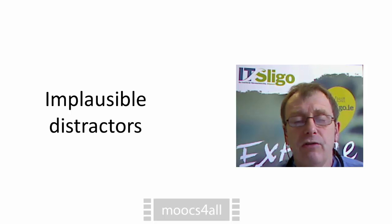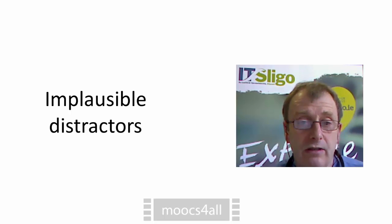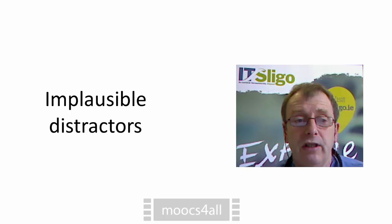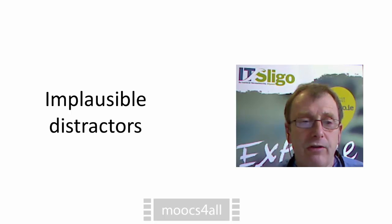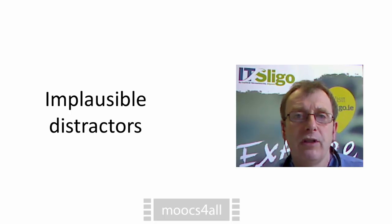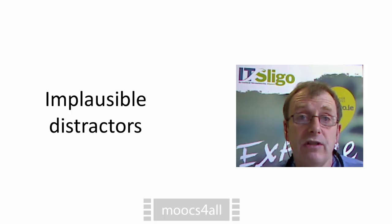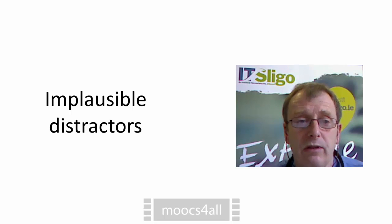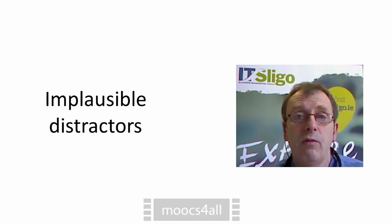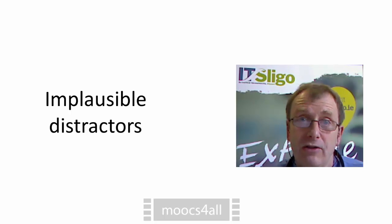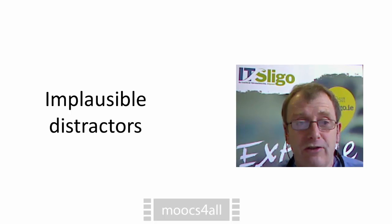Avoid implausible distractors. When thinking of incorrect answers, if you think of wild things that students know aren't true, they're implausible and you're not really testing their knowledge — the questions are just too easy. Try to think of plausible distractors. A good way to do that is to ask learners a question and let them give you answers — you'll find they provide lots of plausible distractors.